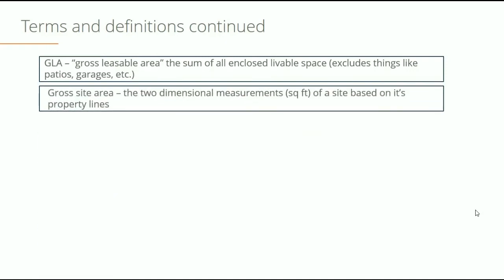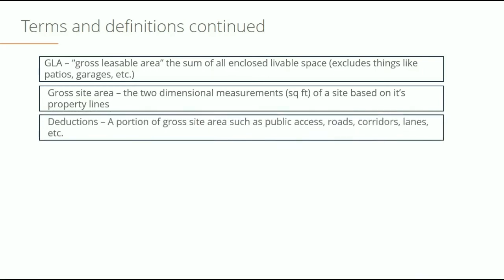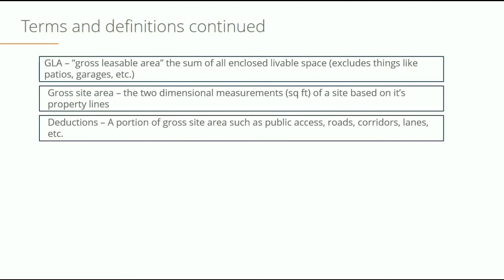The gross site area is the dimensions of the actual site itself in 2D of the actual ground, based on property lines. It tells you, from property line to property line, how big the plot is. However, the gross site area often includes sections of land that can't be developed — these are known as deductions. For example, a public access road or lane that cuts through the property but that you can't build over.